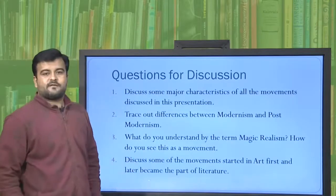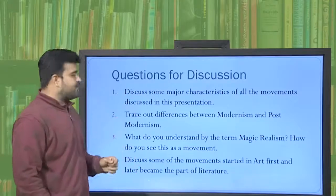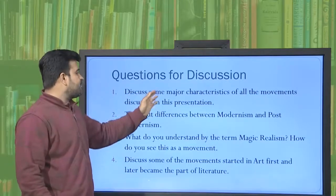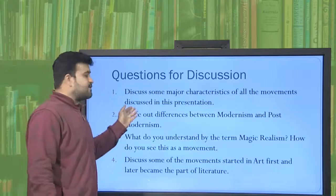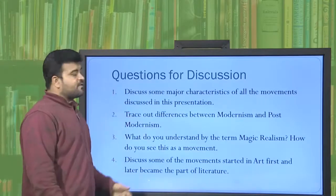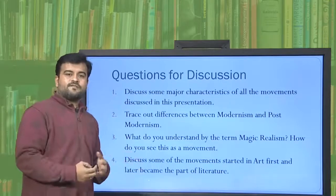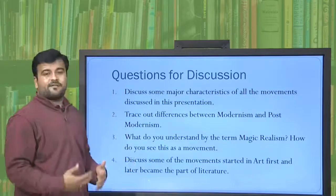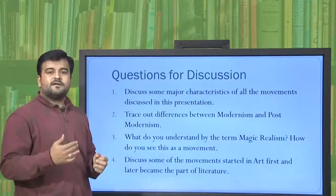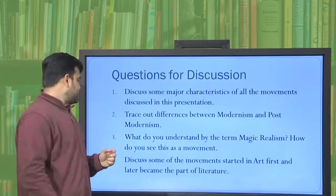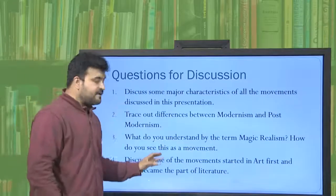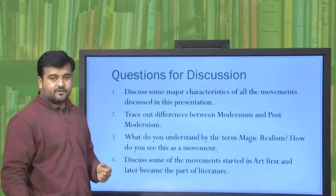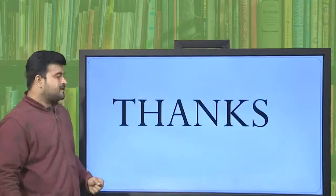Those were the movements we discussed. Here are questions for discussion: Discuss the major characteristics of the movements covered in this presentation. Trace out differences between Modernism and Postmodernism. What do you understand by the term Magic Realism and how do you see it as a movement? Discuss some of the movements that started in art first and then moved to literature later. Thank you, friends.